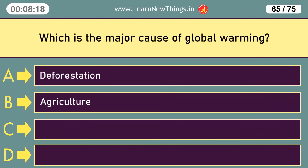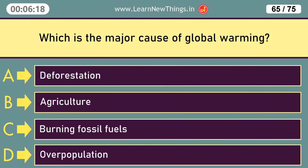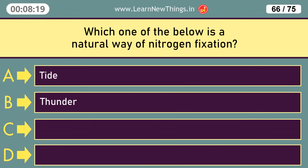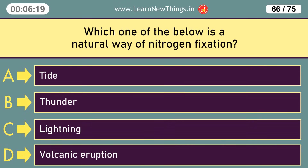Which is the major cause of global warming? Burning fossil fuels. Which one of the below is a natural way of nitrogen fixation? Lightning.